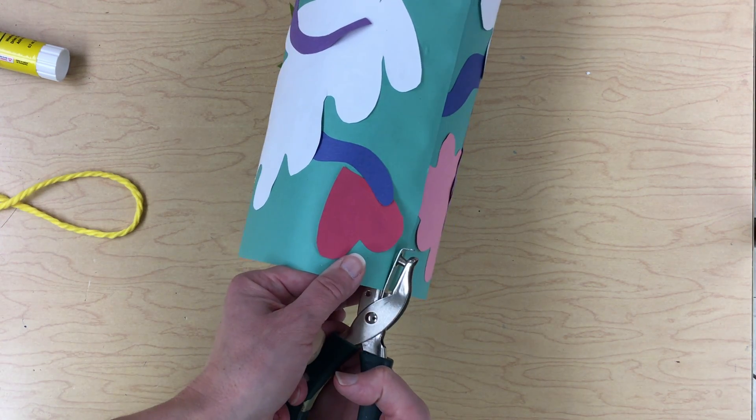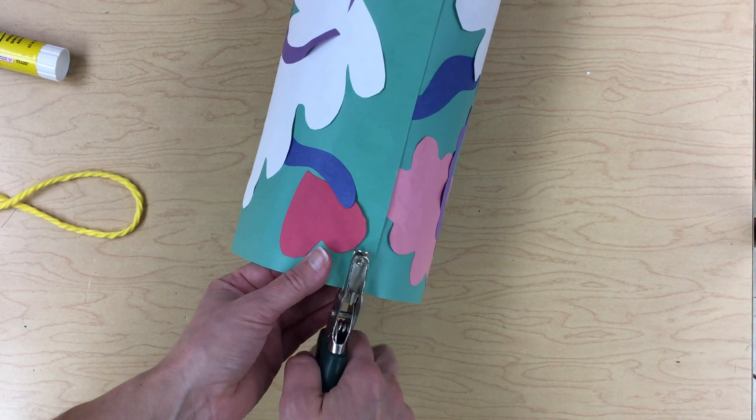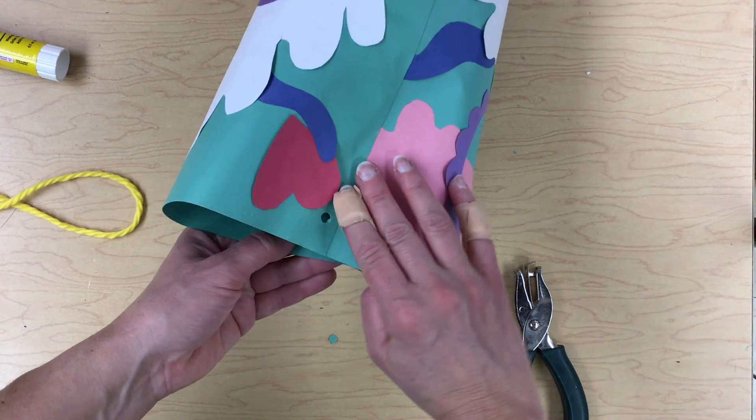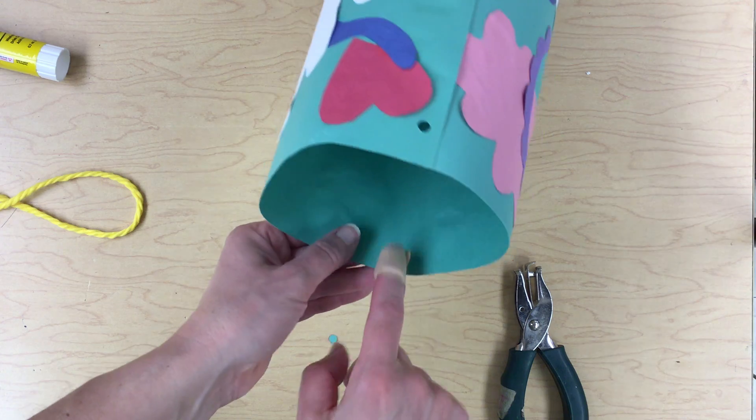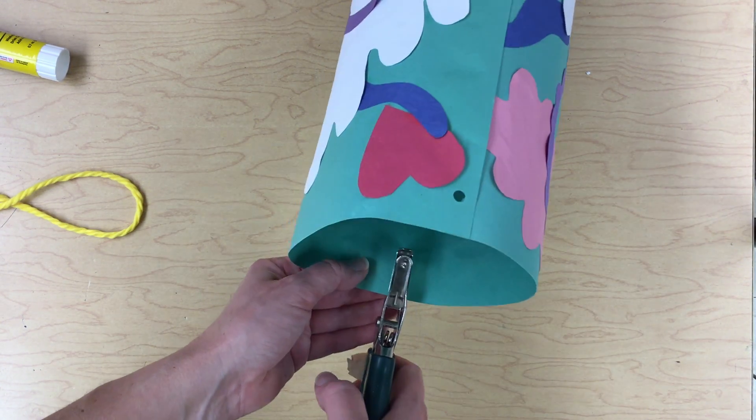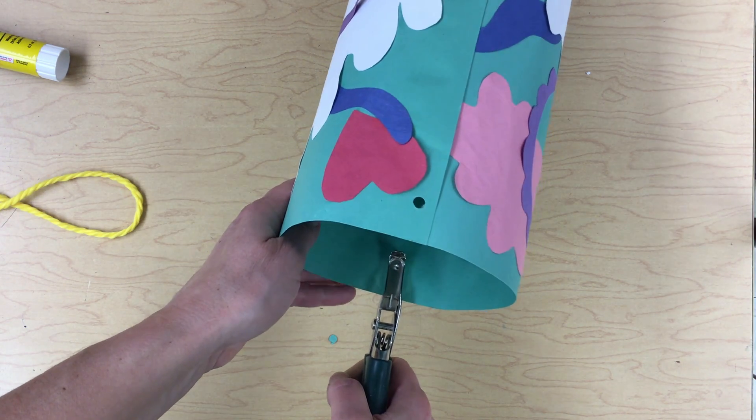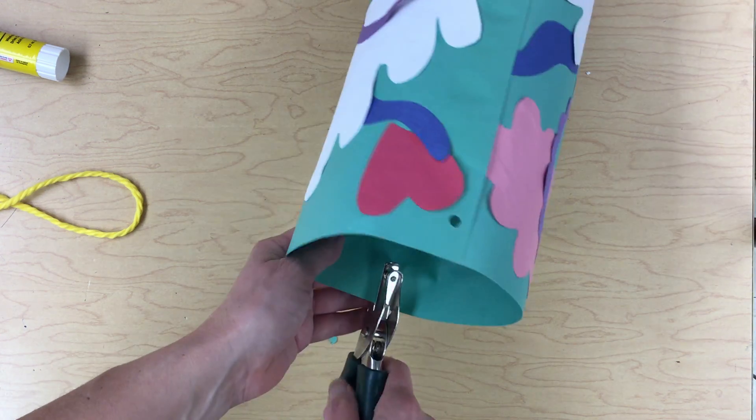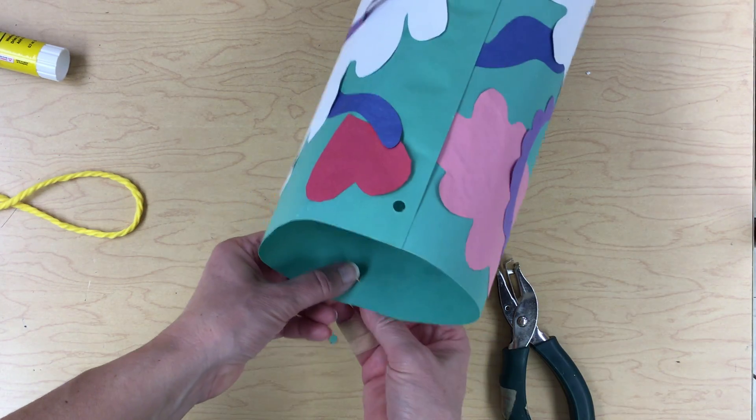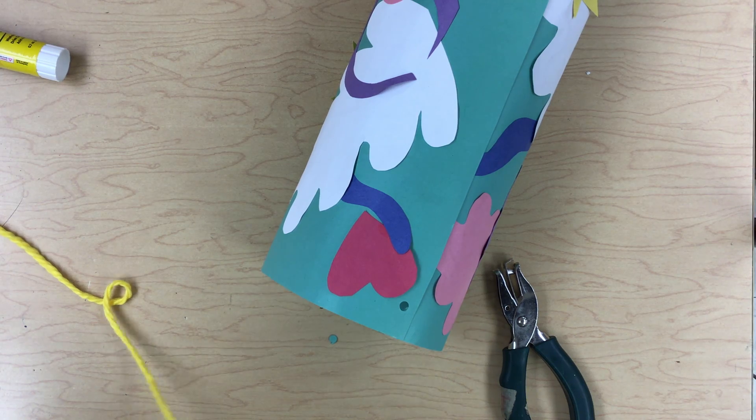I push the hole puncher all the way in, as far as it will go into the mouth of the hole puncher. There we go. There's one. Then I kind of want to do it right on the other side, on the opposite side. I look, find the opposite side, go all the way in. There we go. It does not have to be perfect, just do the best of your ability. My hole puncher did not want to let go. Now here we go.